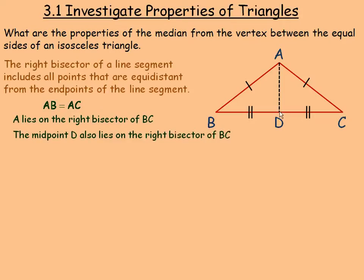Since both the midpoint D and point A lie on the right bisector, the median AD must be perpendicular to BC. D is the same distance from B as from C, and A is the same distance from B as from C, so this entire line must be perpendicular to BC — we'll put a right angle symbol there. So the median is also the perpendicular bisector of BC: perpendicular means it forms a right angle with BC, and bisect means it cuts it in two equal halves since D is the midpoint.